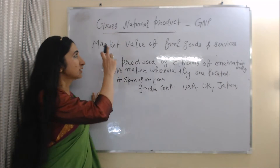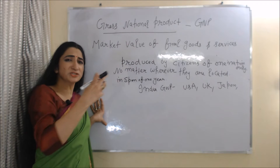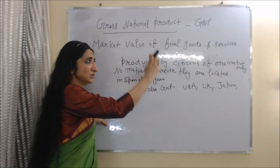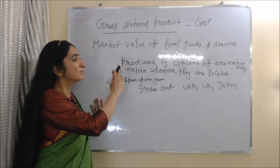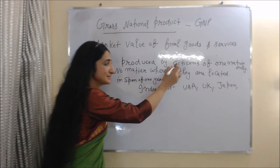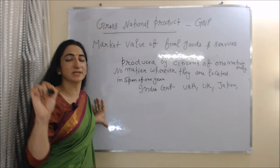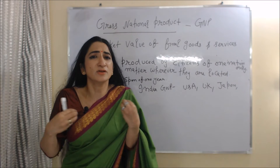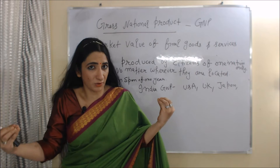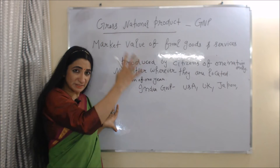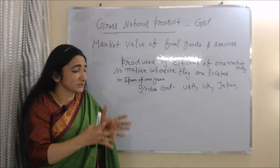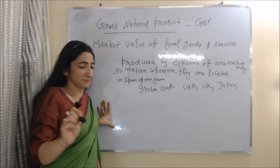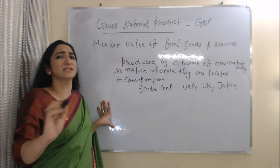Now we will talk about gross national product, or GNP. GNP is the market value of final goods and services produced by citizens of one nation only in a span of one year, no matter wherever they are located. In gross national product, we basically talk about how much production is done by citizens of one nation only, no matter wherever they are located.